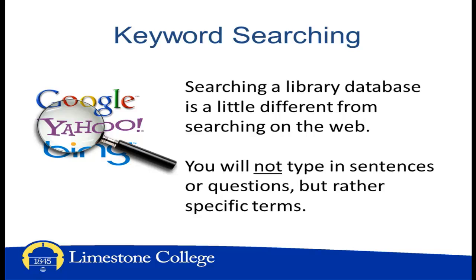Searching in a library database is a little different from searching on the web. By using keywords, you are searching for terms in any part of the item record such as the title, author, subject headings, summaries, abstracts, etc. Since a keyword search finds words anywhere, it is a very broad type of search and will return a large number of results, not all of which will be directly related to your research.